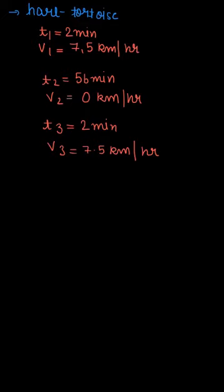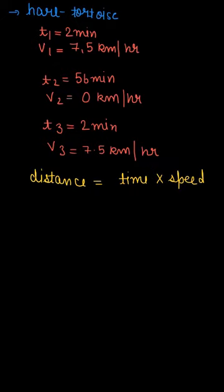So firstly, we are having the time and the speed for all of these. Let's find the distance. We know that the formula for calculating distance is basically equal to time multiplied by speed. But firstly, you need to change the units of all of these. So let's write the time in seconds.